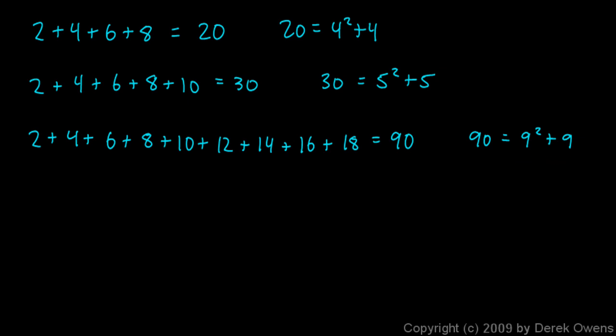Does that pattern hold for any number of terms? In other words, could I say this: 2 plus 4 plus 6 plus, and so on, up to 2n, because remember my nth term will be 2n. I'm just counting with the even numbers here, the nth term is going to be 2n. Is that always going to be equal to n squared plus n? We seem to have a pattern that we've seen in these numbers.